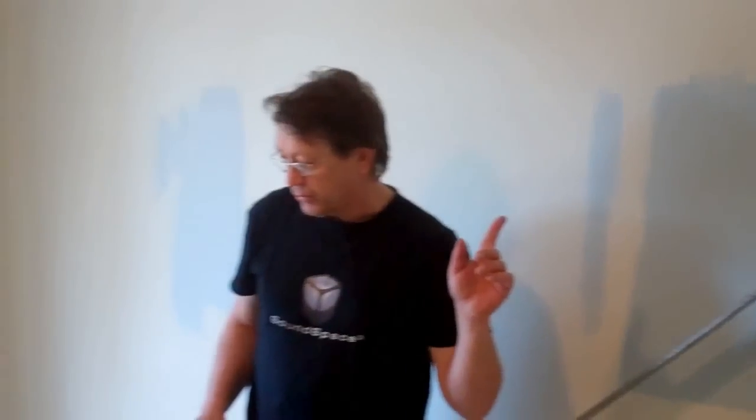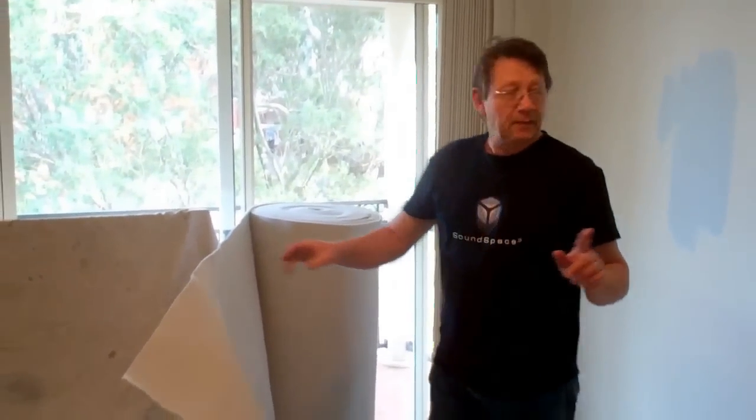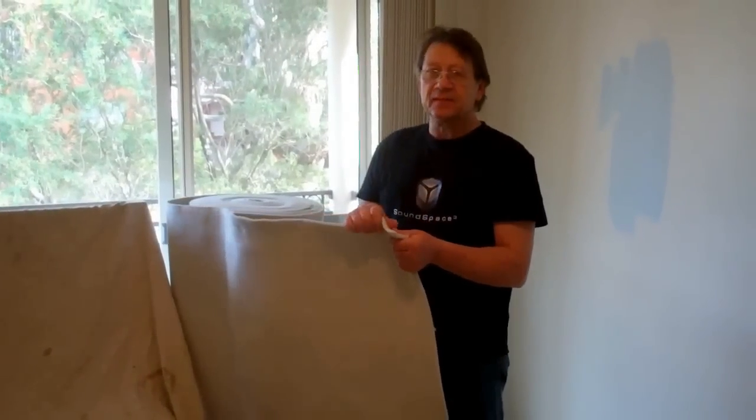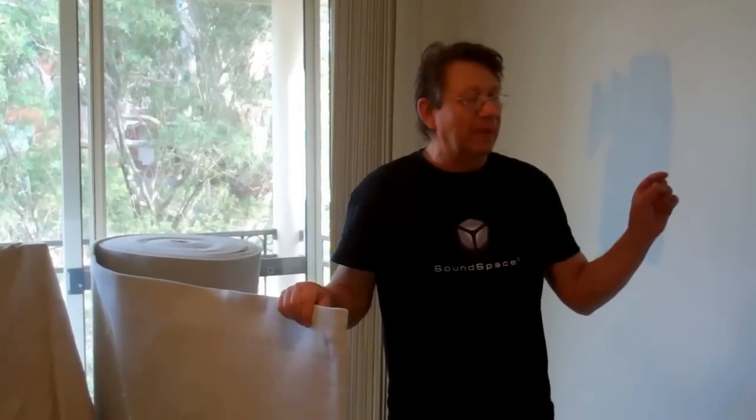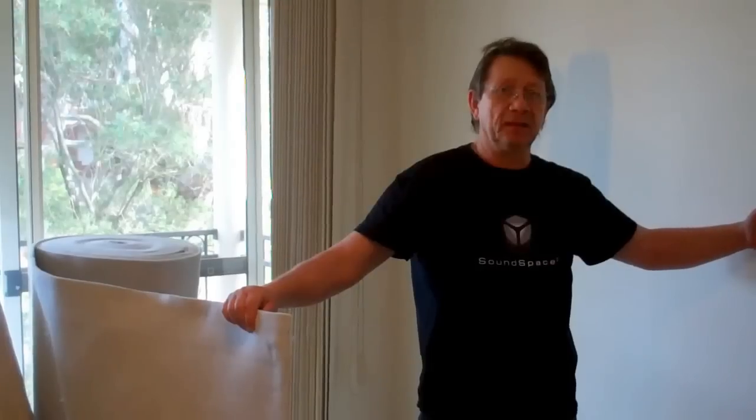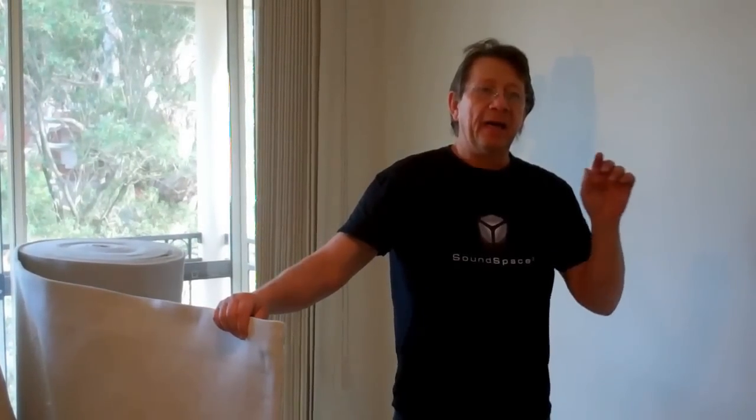So once we install this, we're going to install another product between the furring channel which is a very high density polyester absorber. And we're going to glue that on the wall between the furring channel. Now this is quite important because we create an air gap, a small cavity between the plasterboard, the new plasterboard and the existing plasterboard. And each time you have an air gap, you've got reverberation inside and you've got a bit of echo and the sound increases. So this is to reduce that increase of sound.